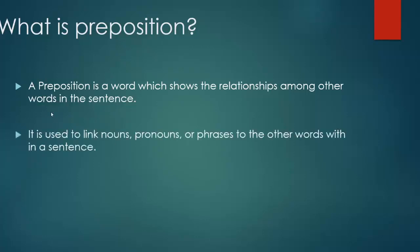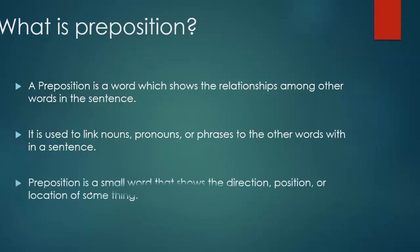The next definition: a preposition is used to link nouns, pronouns, or phrases to other words in a sentence. Nouns, pronouns, phrases — these are parts of sentences. The words used to link two nouns, pronouns, phrases, or other words in a sentence are called prepositions, just like in, on, at, to, between.